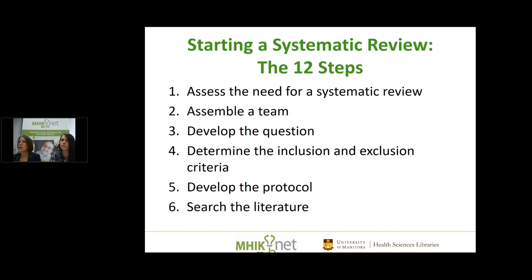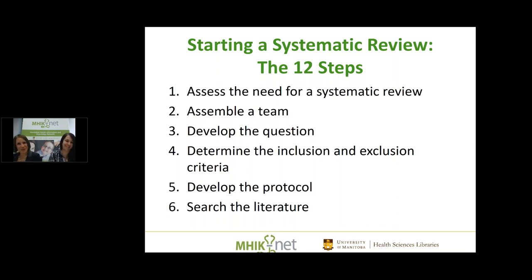The 12-step process starts with: is there a need for this systematic review? Then assemble the team. You need at least one librarian to run the search, a methods expert like a biostatistician or epidemiologist, and a minimum of two content experts — so at least four people. If you see something with 'systematic review' in the title and only one or two authors, your alarm bells should sound. It doesn't mean you throw it aside entirely, but be wary of what it really is.